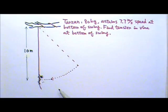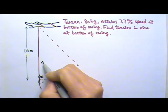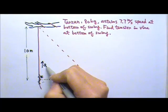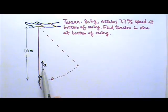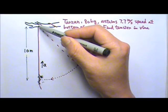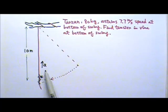Let's follow the problem solving procedures. At the bottom of the swing Tarzan has an acceleration that is upward because he is doing circular motion, so the acceleration is the centripetal acceleration pointing towards the center. The center of the circle is up there, so that's his direction of acceleration.